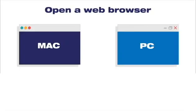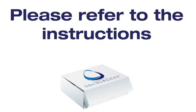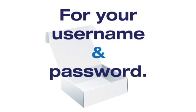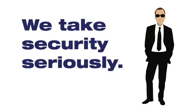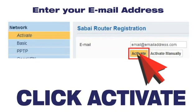Open a web browser and type 192.168.199.1 in the address bar. Please refer to the instructions in your Sabai VPN router box for your username and password. We take your security seriously. On the Activation page, enter your email address and click Activate.